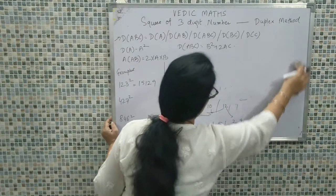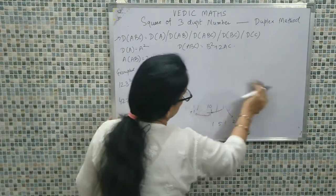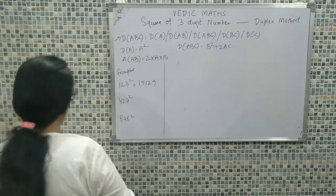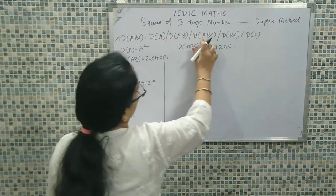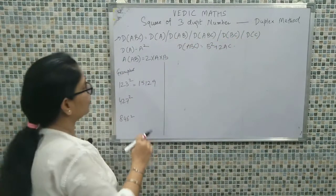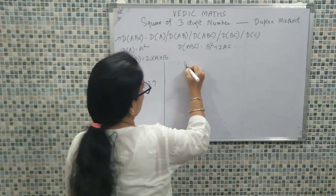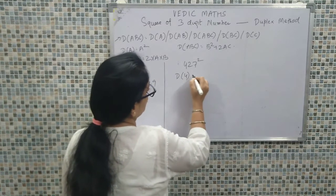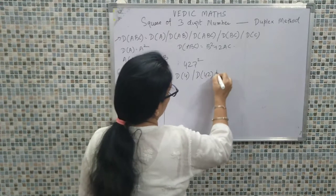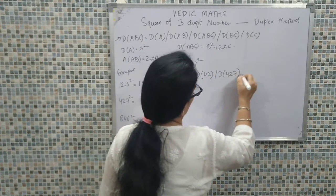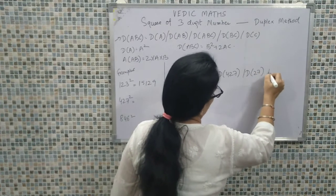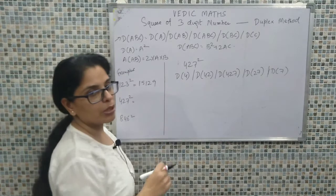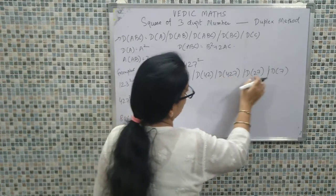Here we don't have prolonged multiplication — we only need to split the calculation into 5 segments, because when calculating the duplex of a 3-digit number the calculation is done in 5 steps. Now calculating the square of 427: we have duplex of 4, duplex of 42, duplex of 427, duplex of 27, and duplex of 7 — ensuring 5 components for a 3-digit number.